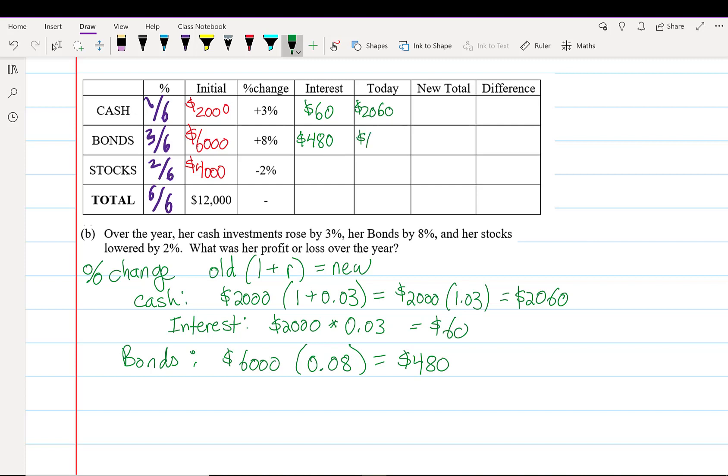Finally, stocks is a loss. That's okay, we can just multiply $4,000 × -0.02, which gives us -$80. So she lost $80.